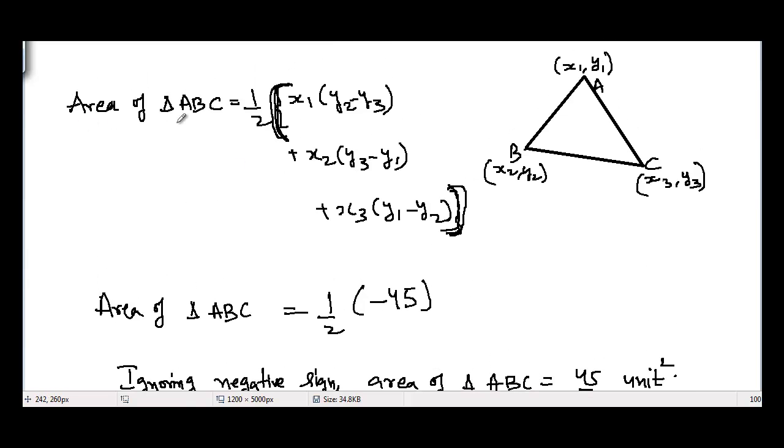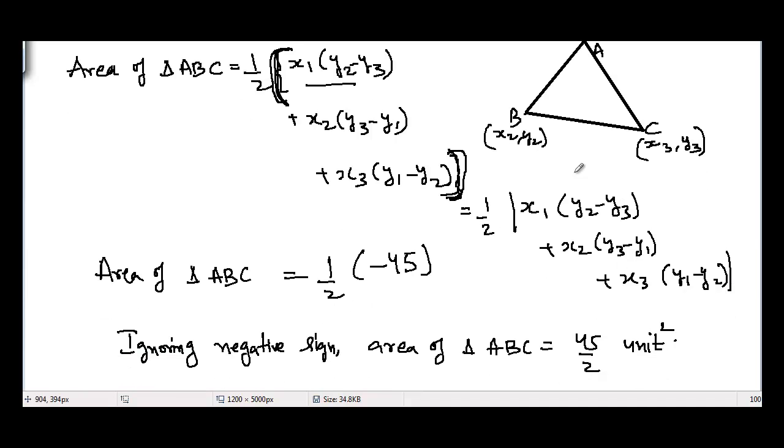other words you can also say that area of triangle ABC is equal to 1 by 2 absolute value of this whole portion [x1(y2 minus y3) plus x2(y3 minus y1) plus x3(y1 minus y2)]. This is an absolute value function. This is usually covered in higher grades like 11th or 12th grade and the people who